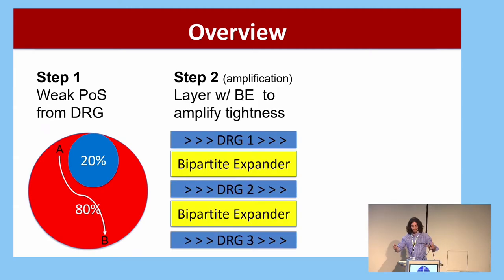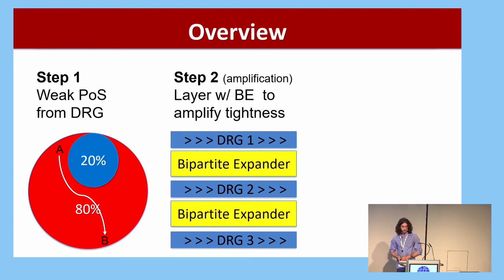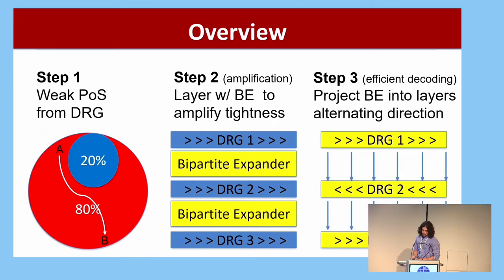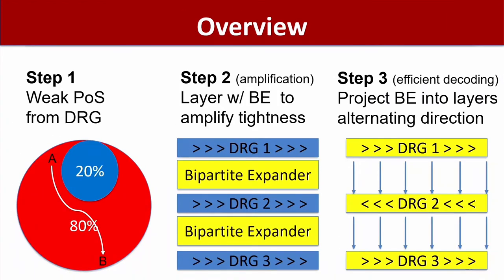The next step is to amplify this to get a tighter proof of space by layering depth-robust graphs and adding bipartite expander edges between the layers. We can show this gets you a tight proof of space, but not one where you can extract data efficiently. The last step is localization — a technique that modifies the structure by absorbing or projecting the bipartite expander edges into the layers. We reverse the edges of the depth-robust graph at every layer to maintain proof-of-space security. The result is a graph structure where each layer can encode the labels of the previous layer and extraction can be done more efficiently.